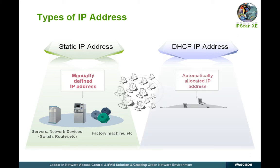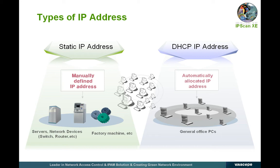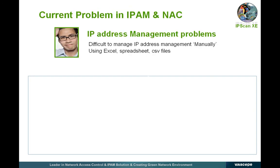Since the DHCP IP is assigned automatically by the DHCP server, the user does not need to set it manually. This is usually for the general user PC as well as large-sized network systems, except for the server and the major network equipment. Now, let's look at the current issues regarding the IP address management. There are still many companies and organizations who take less care in managing the IP addresses. Most of them use Excel or CSV format to do the manual management of new assignments and changes to the IP addresses, which causes network problems and difficulty in real-time management.